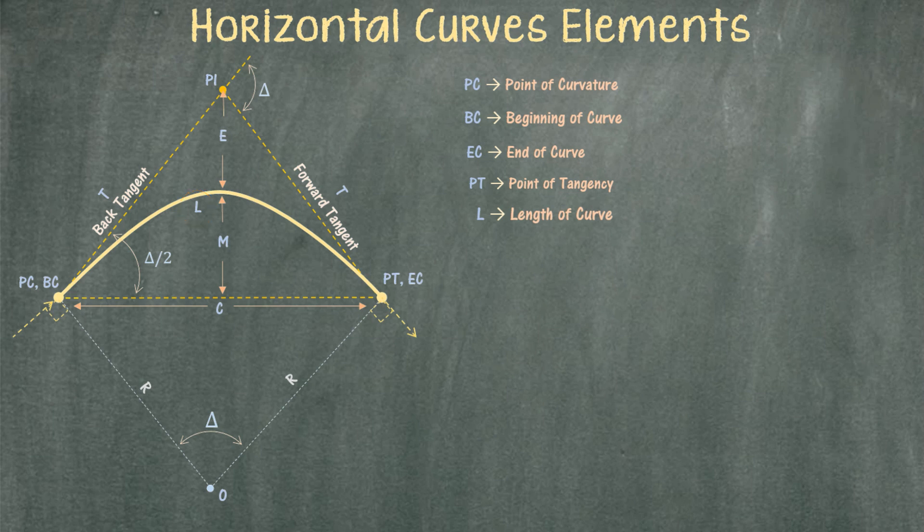I want to bring your attention back to the very first point on the curve. Before the road actually reaches this point or the beginning of the curve, it's usually a straight line. Now, if we were to extend this straight line beyond the beginning of the curve, then we'll have what is called our back tangent.